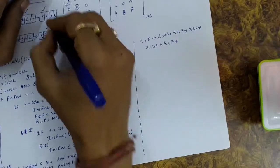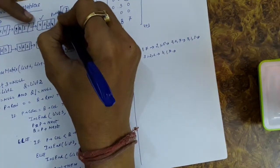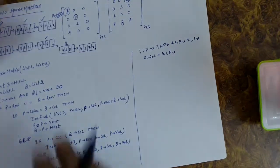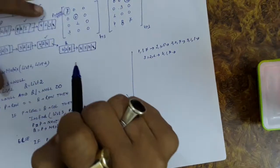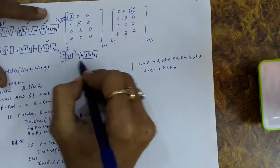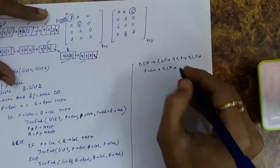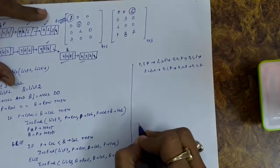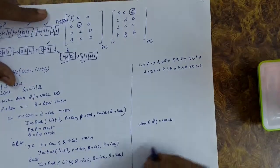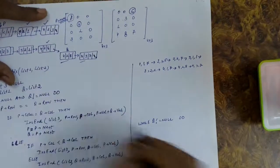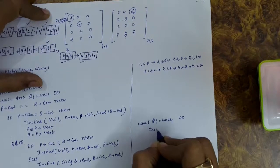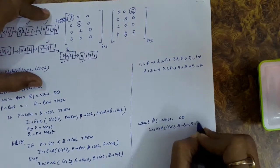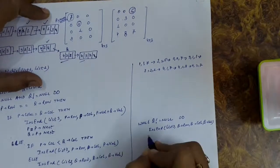We advance to the next nodes. Advancing from this node, P becomes null while Q still has remaining nodes. Comparison between P and Q is no longer possible. So whatever nodes remain in the second linked list, we add them to the final linked list one by one. While Q is not null, we perform insertion into list three with Q dot row, Q dot column, and Q dot value, and advance Q to the next node.